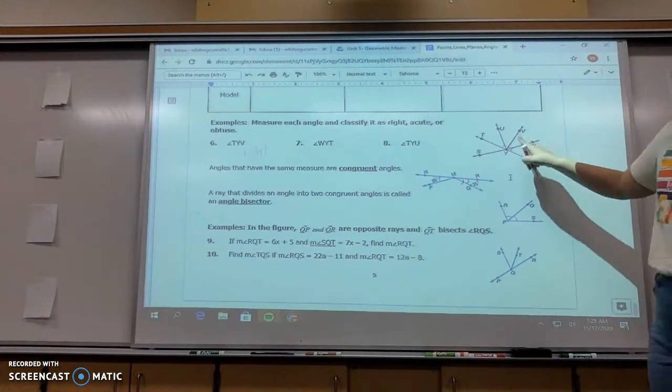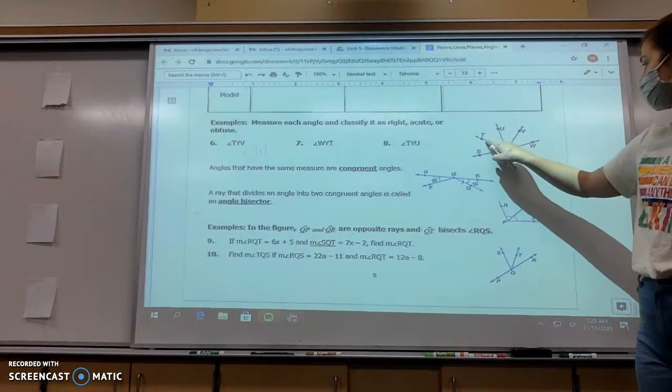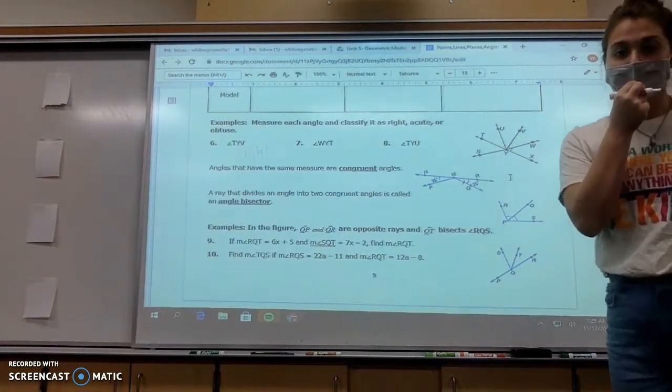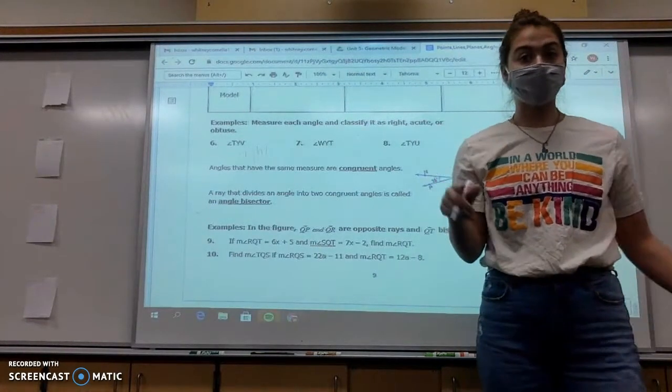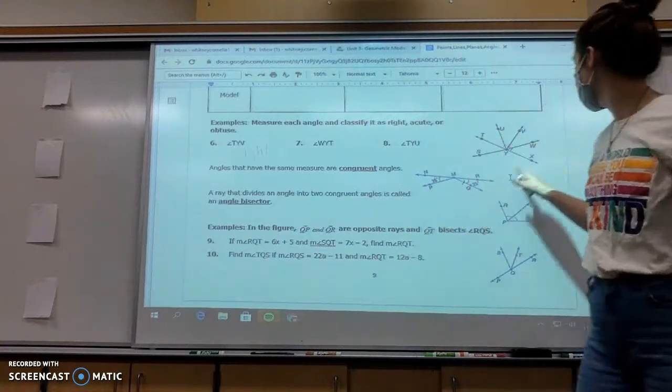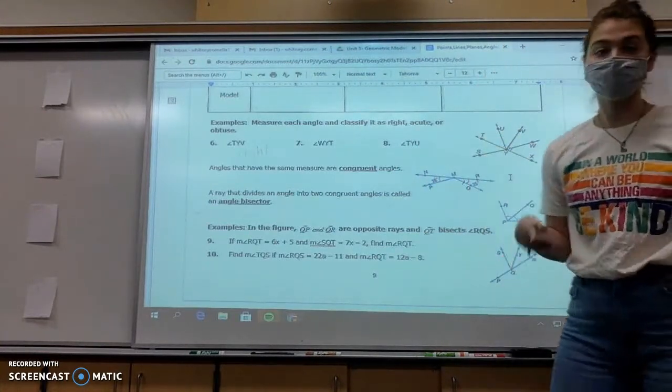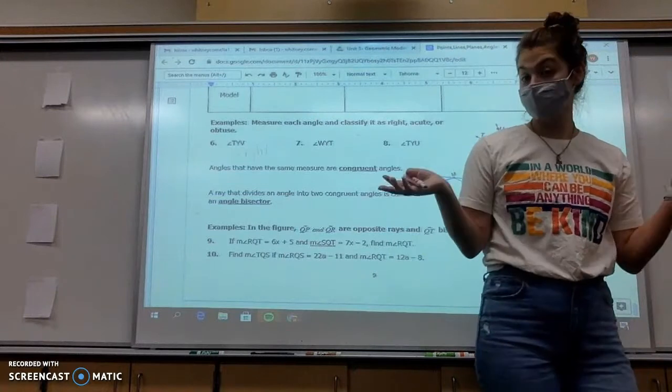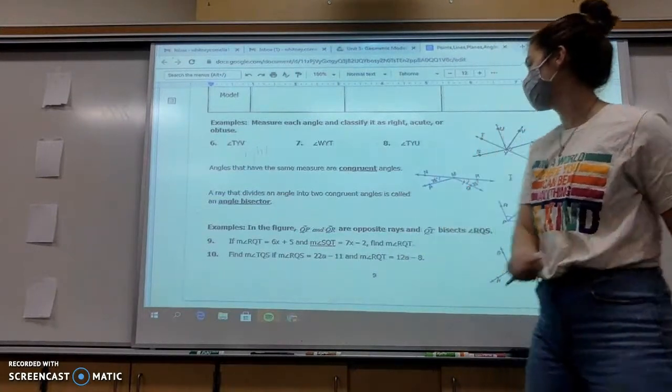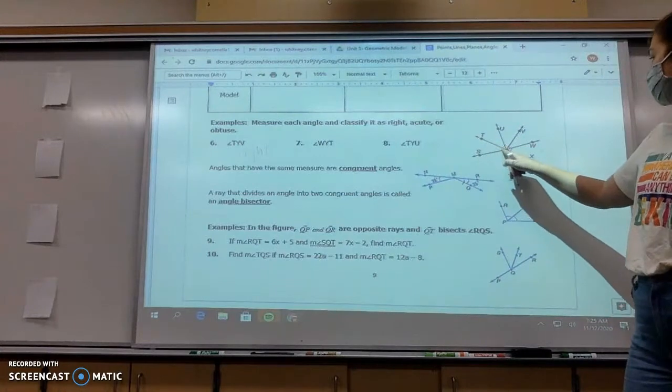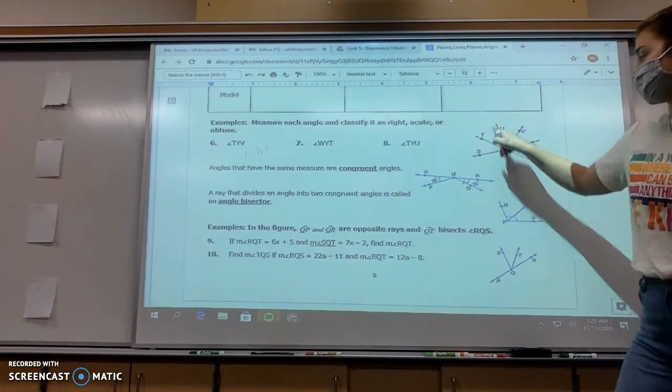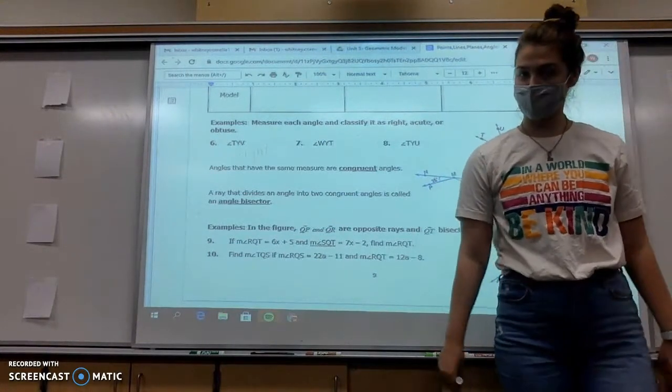WYT, WYT. I always trace my finger over the angle that's asking so I know exactly what it is. WYT, that is greater than 90, so that is obtuse. And then TYU, TYU, that looks less than 90. So it is an acute angle.